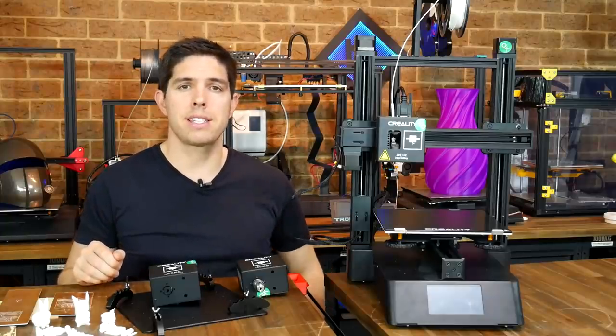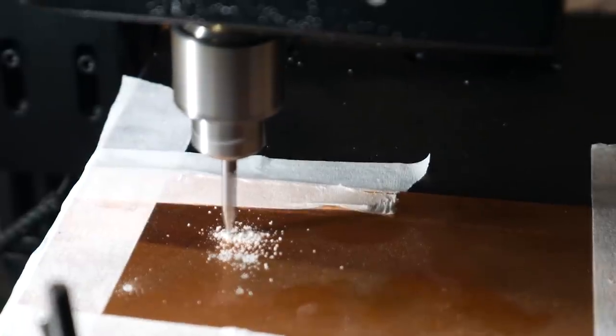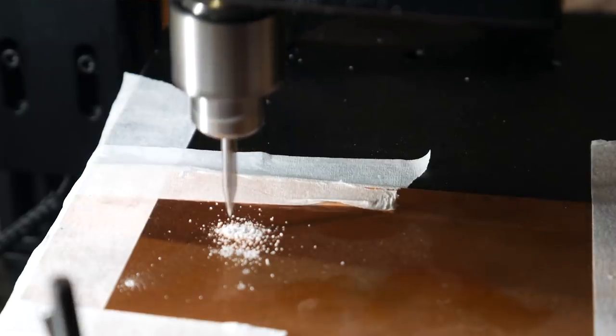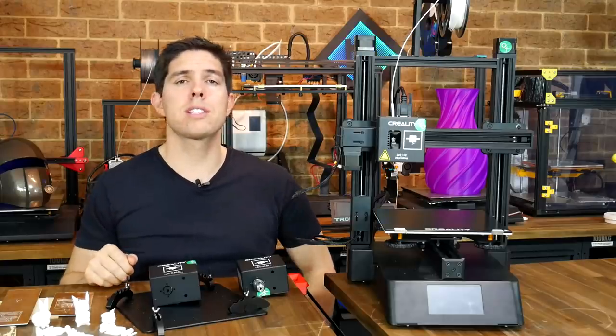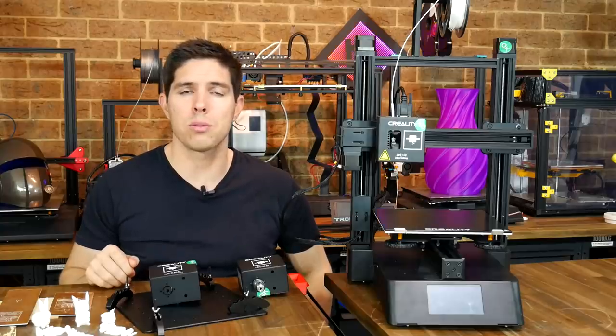At the moment the weakest link is as a CNC engraver, it's just not rigid enough to do any type of rigorous engraving. But if you are patient you can slow down the feed rate and you should be able to achieve some good results.